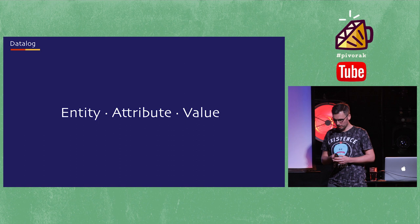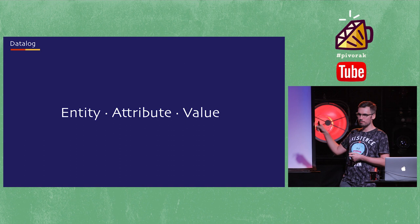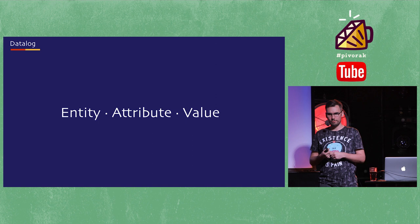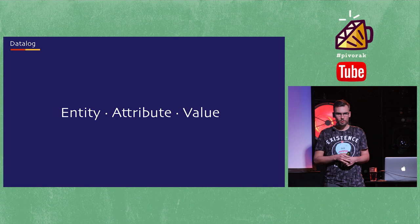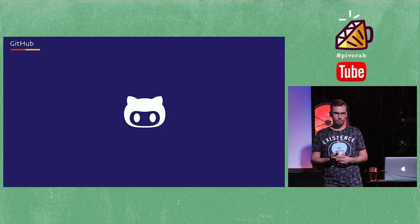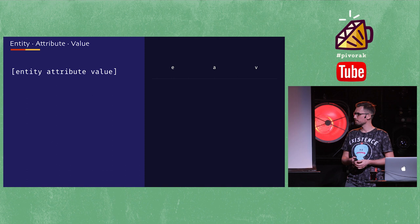Datalog has this nice idea that it doesn't matter how complicated your domain is — you only need this to describe it: an Entity-Attribute-Value triple store, also known as RDF if you're into semantic web stuff. I don't expect you to believe me, because I know you've all written very complex systems and something this simple couldn't possibly work. The point of this talk is to actually show you that it does. We're going to use GitHub as our example because I assume you're all domain experts, so we can get straight to the code.